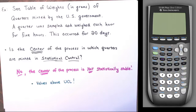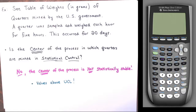In both the R chart and the X-bar chart videos the answer was 'not in control,' but processes can be in control. You've seen that in the run chart video. If none of the criteria are violated — no obvious pattern or trend, no points above the UCL or below the LCL, and no runs of eight above or below the center line — then you can say the process is stable and you don't need to go in and fix anything at the moment.